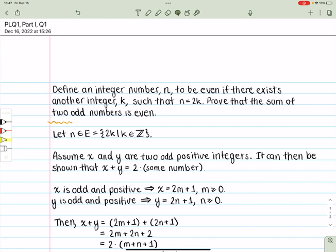The question reads: define an integer number n to be even if there exists another integer k such that n is equal to 2k. Prove that the sum of two odd numbers is even. So let's start with defining n. n is part of the even set of numbers and we can define the even set of numbers by this 2k where k is any integer.